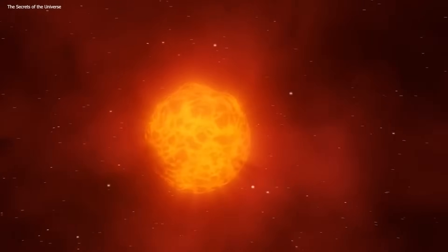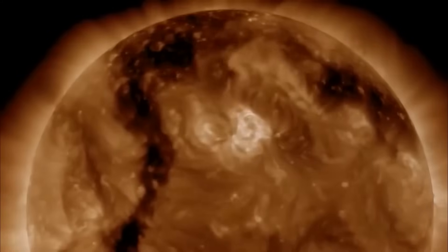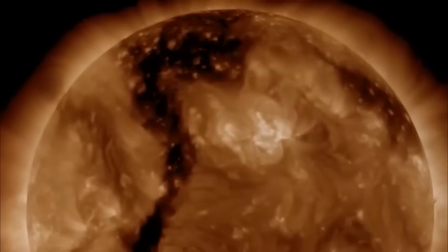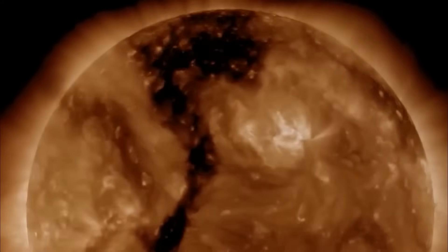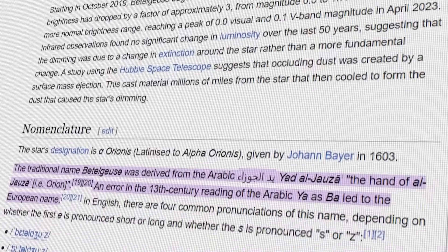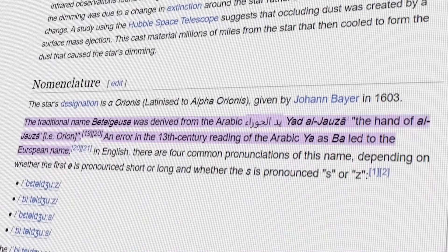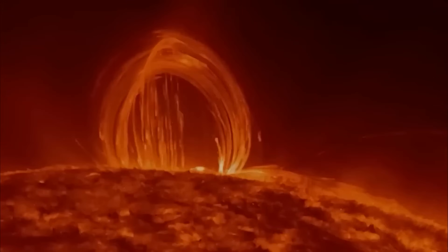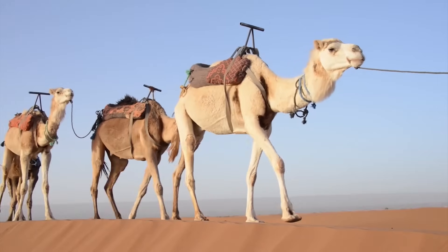Betelgeuse stands out not only for its brightness, but also for its history and significance in human culture. Named after the Arabic term Yad al-Jawza, which means the hand of Orion, Betelgeuse has been observed and documented by ancient civilizations.